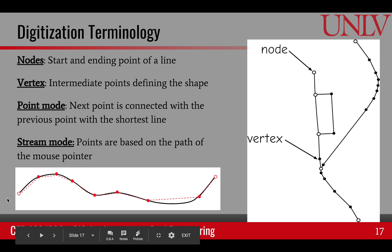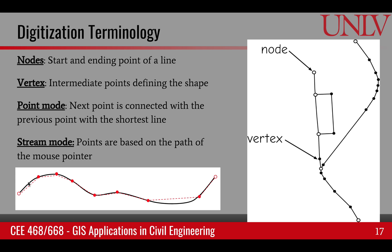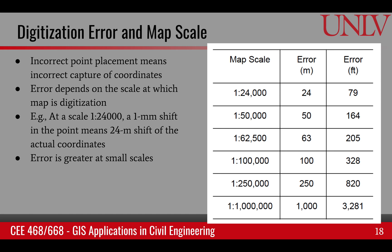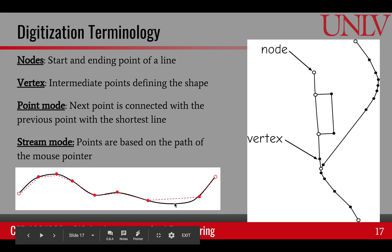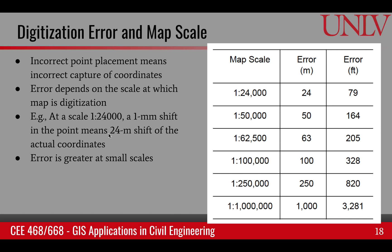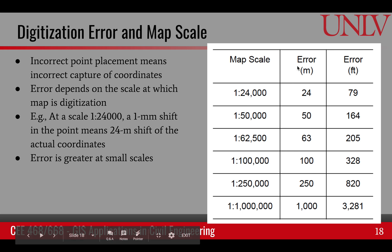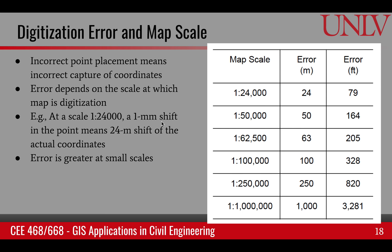There is another mode called stream mode. When turned on, the mouse pointer is used to traverse the curve and points are chosen based on a sampling density set in the software or manually. It's important to note that errors in digitization translate into errors on the ground. For example, on a 1:24,000 map, a 1mm digitization shift equals 24 meters of error in the location of that point.